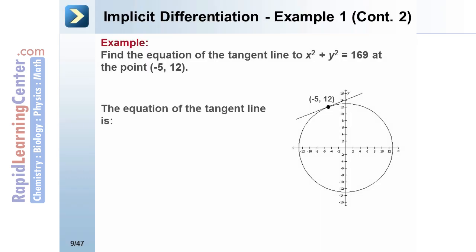We are now ready to find the equation of the tangent line by substituting in for each of the variables. We know the value of y1, the value of m, and the value of x1. This makes the equation of the tangent line in point-slope form: y minus 12 equals 5 twelfths times the quantity x plus 5.